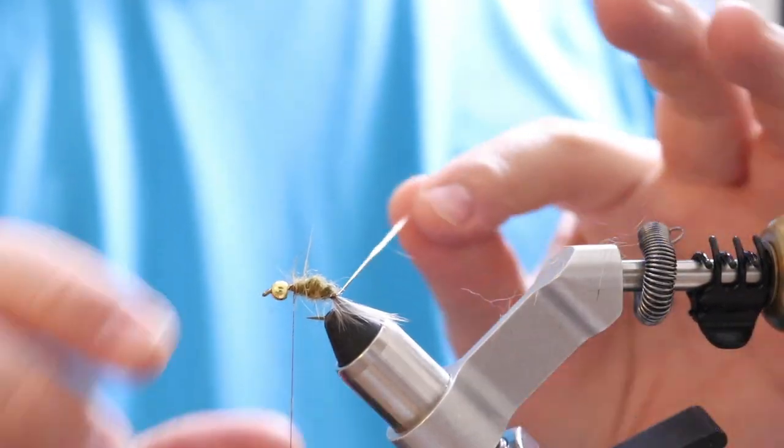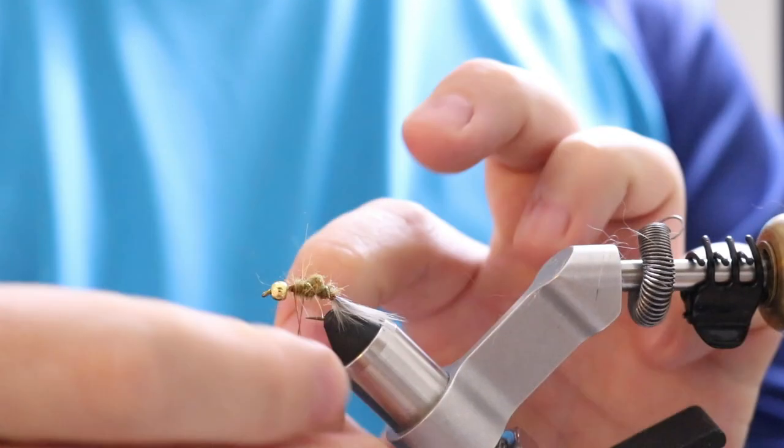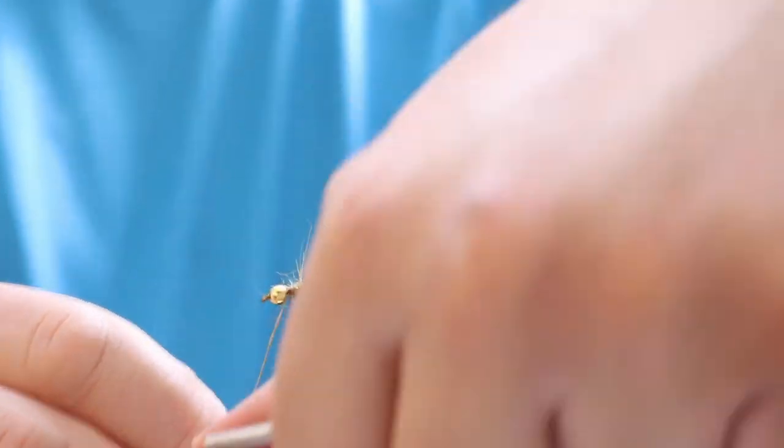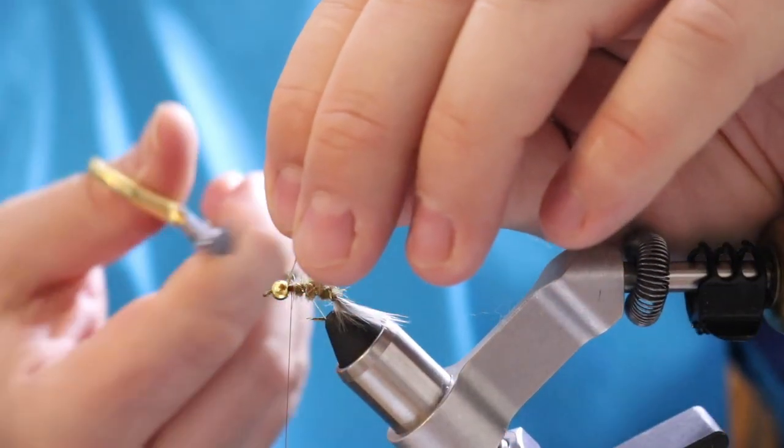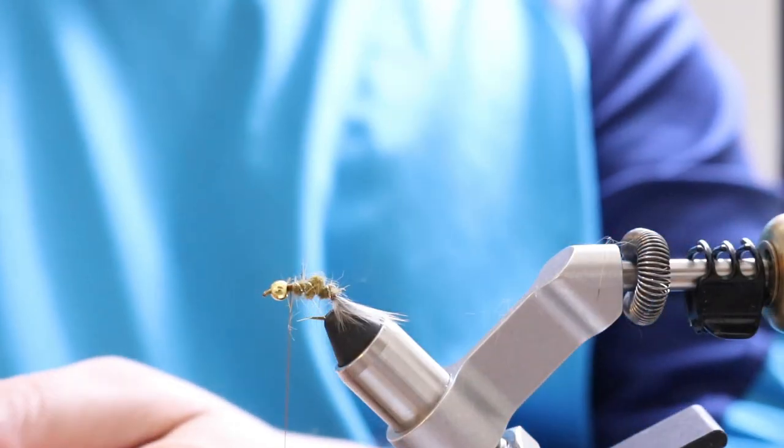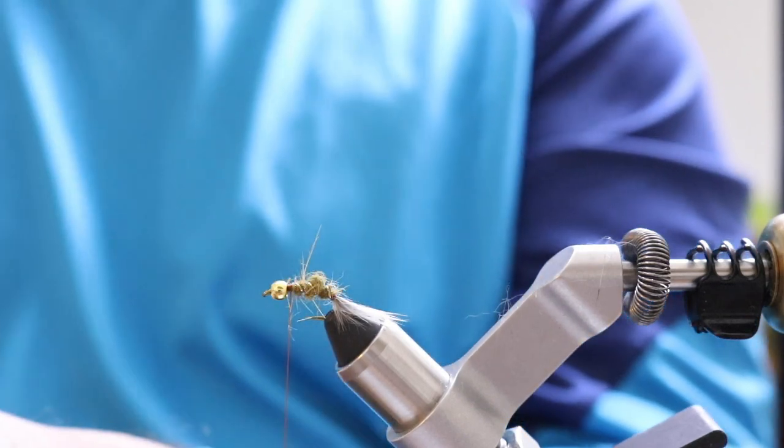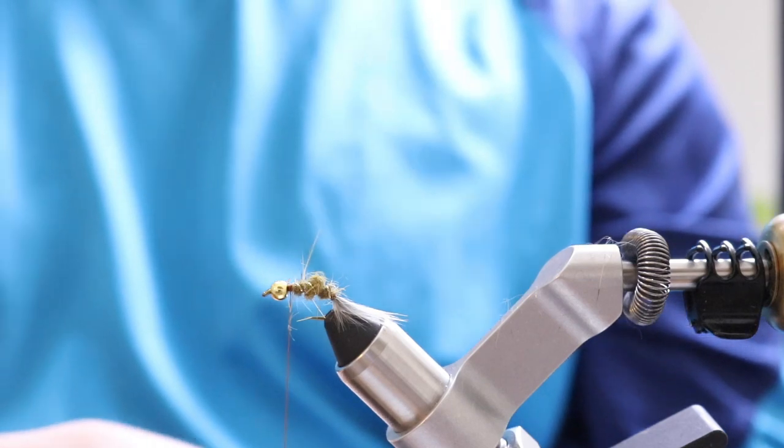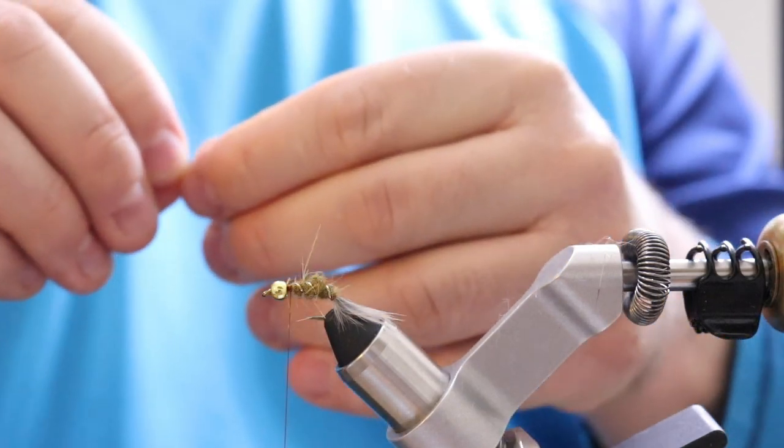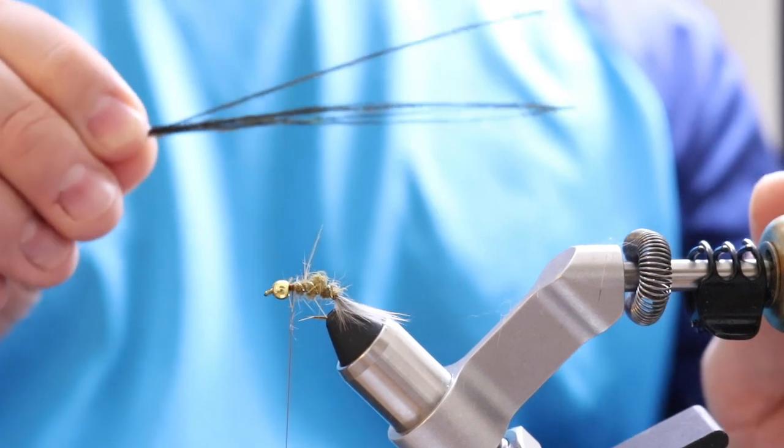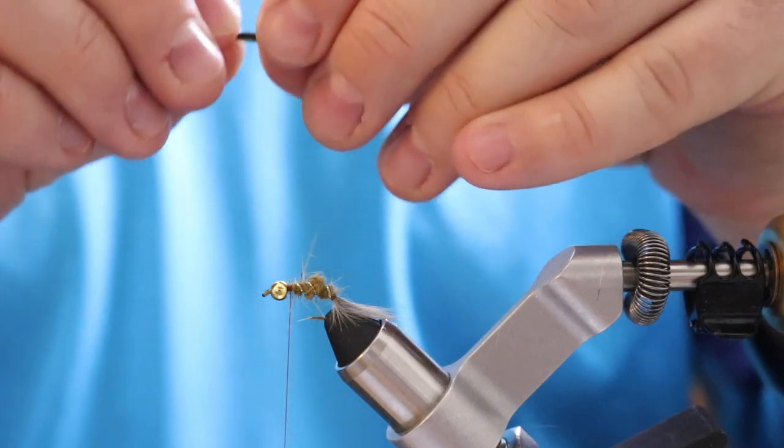And since we went this way with our thread wraps, we're gonna go the opposite direction with our tinsel. You just need, I don't know, three ribs, ish. And then capture that there. Cut that off. Like that. And then you take, I don't know, four or five peacock herl strands. You don't need a ton. You just need enough to get the flash. So I'm gonna take, let's count them, let's go, four, five little peacock herls.